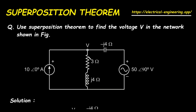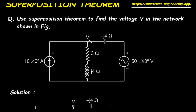First, let's look at the original circuit. On the left, we have an independent current source providing 10 at an angle of 0 degrees amps. On the right, we have an independent AC voltage source providing 50 at an angle of 90 degrees volts. In the middle, we have a vertical branch with a 3-ohm resistor in series with an inductor that has an impedance of J4-ohms. In parallel with that branch, we have a capacitor with an impedance of negative J4-ohms. The voltage V is the voltage across these parallel branches.